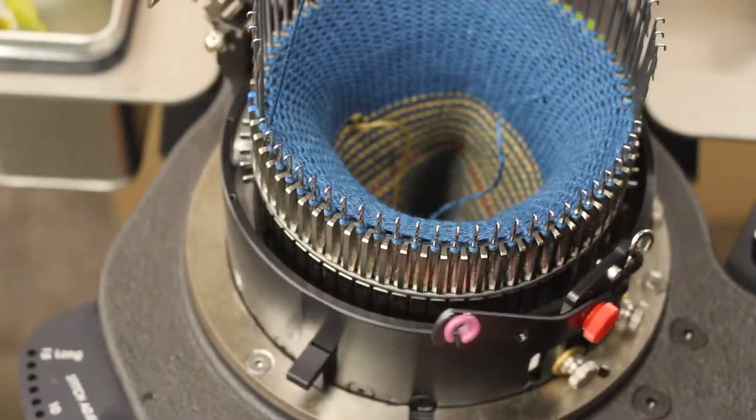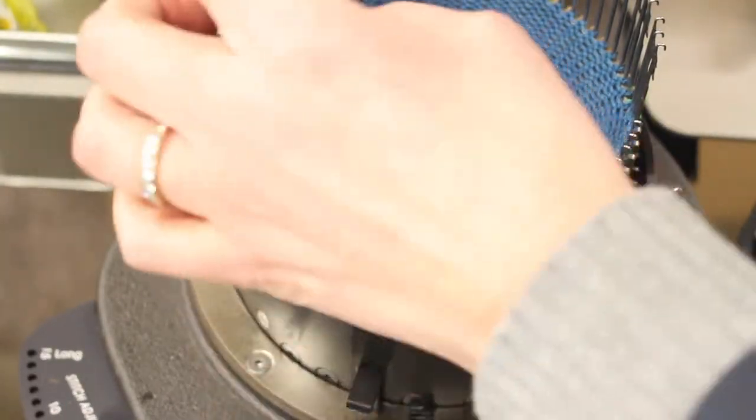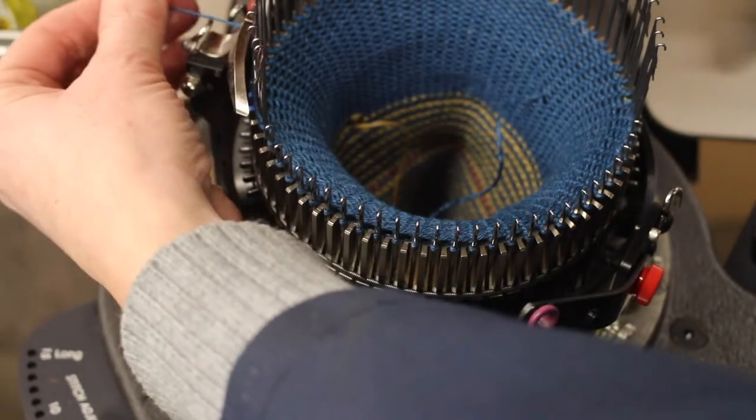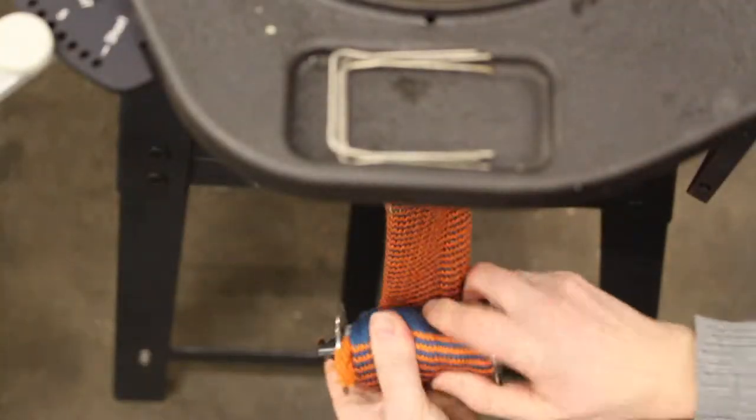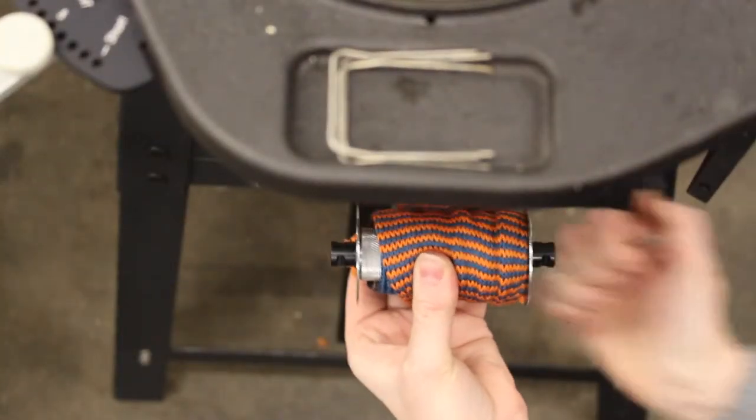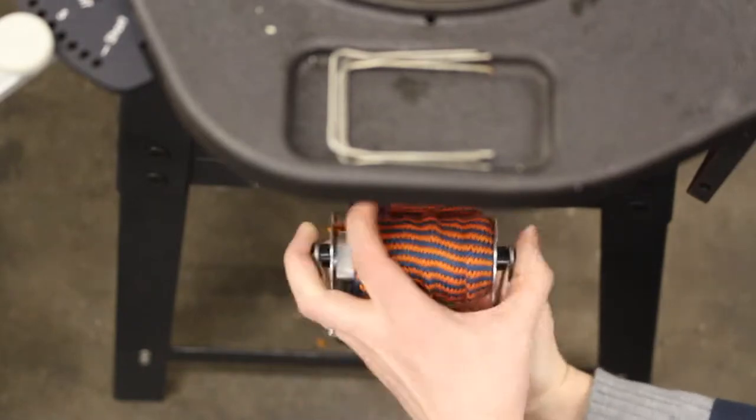Rotate the cam shell until the yarn guide is in position so that you can reposition the yarn into the yarn guide. Reattach the knurled roll, the wire hook, and the weighted strap.